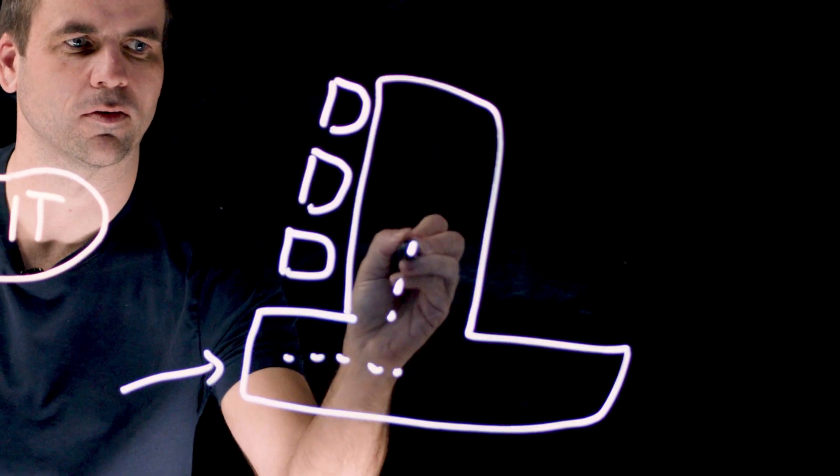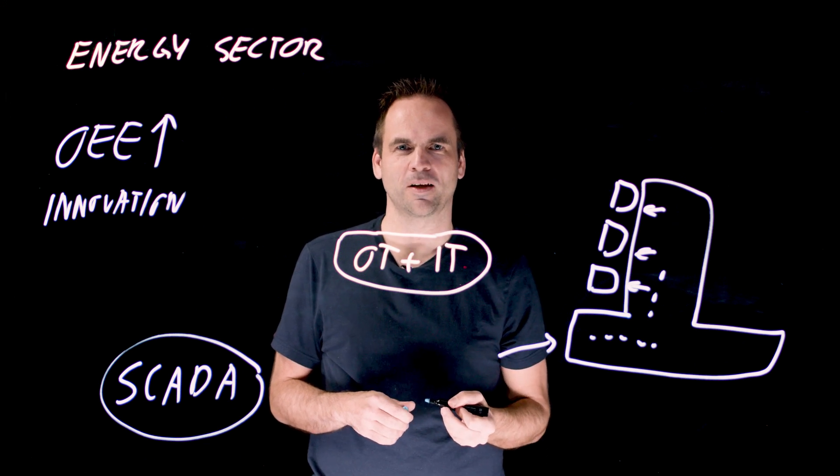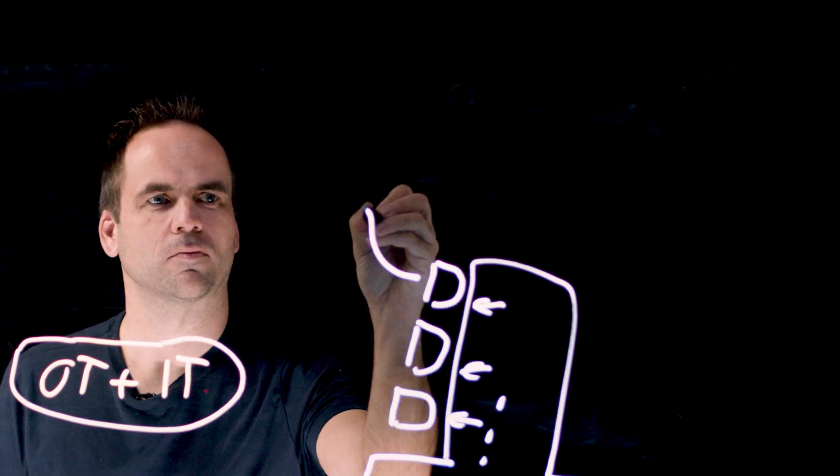So the data is flowing in once from the OT side, the robots, the PLCs, the production line. And then you provide access to the data to other systems. Not all of these systems are real time.